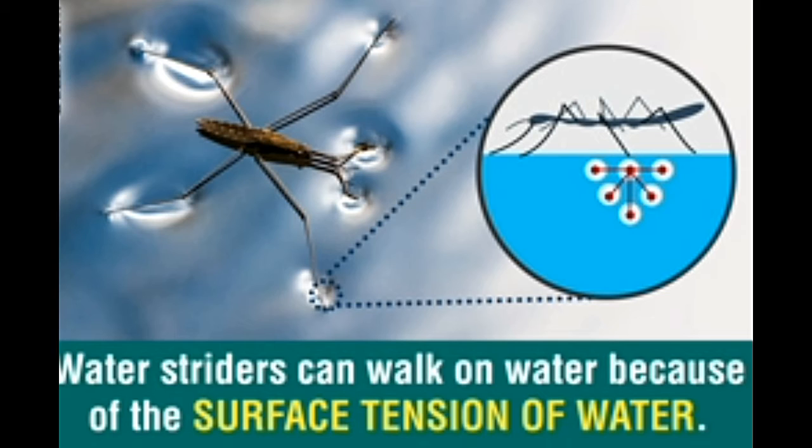The force of attraction between like molecules in a liquid lends a tendency to contract at the surface. Hence, the surface is said to be under tension. Surface tension is the property of a liquid surface to resist external force. It is the reason why the surface of a water body looks like a stretched membrane.